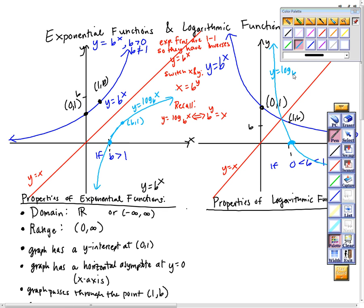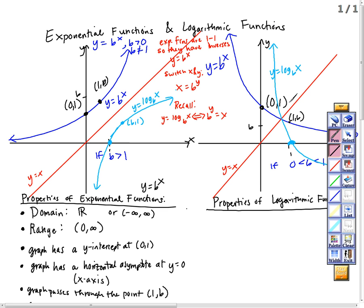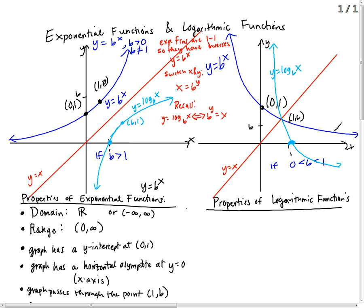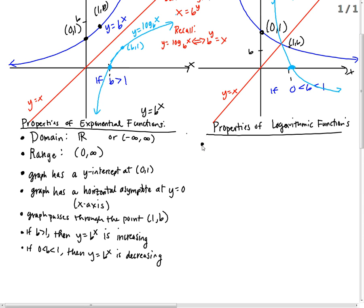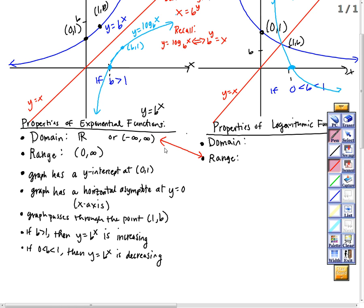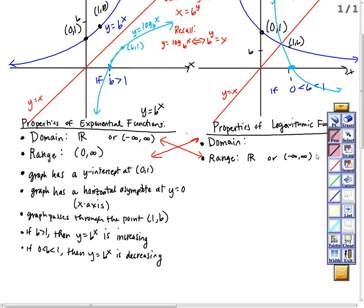So if we have an exponential function, switch the x and y, we do get a logarithm — it's just written as an exponential function, but these are equivalent. This is y equals log base b of x. Now let's look at our graph and think about what we know about inverses, and see if we can come up with similar properties for logarithms. The domain of a function is the range of its inverse, so the domain of a logarithm will be the same as the range of an exponential function — from zero to infinity.